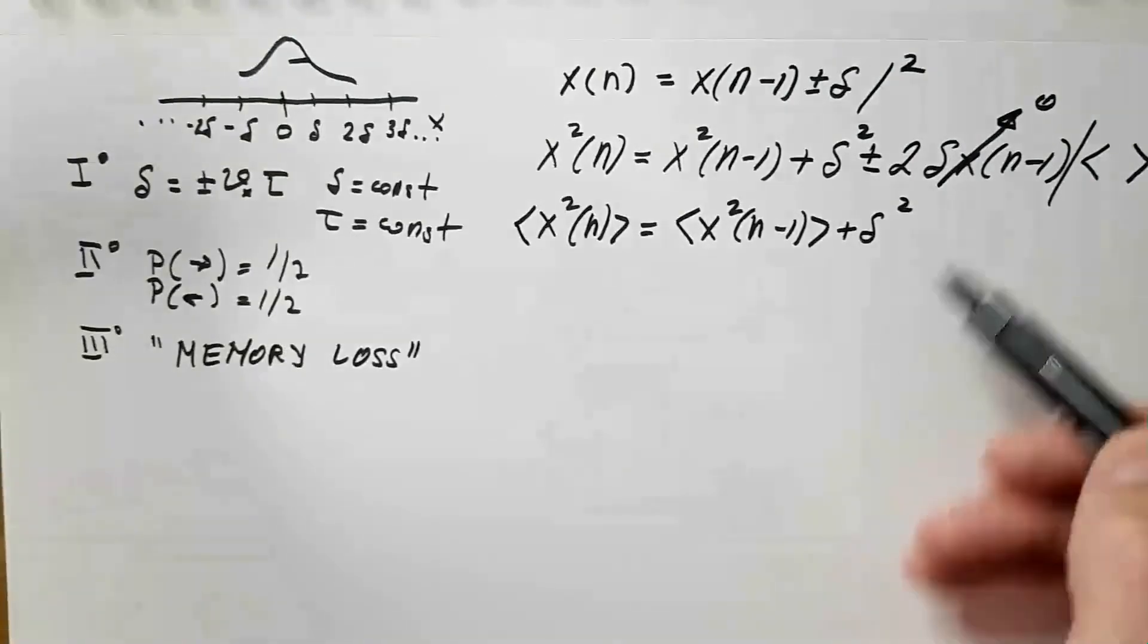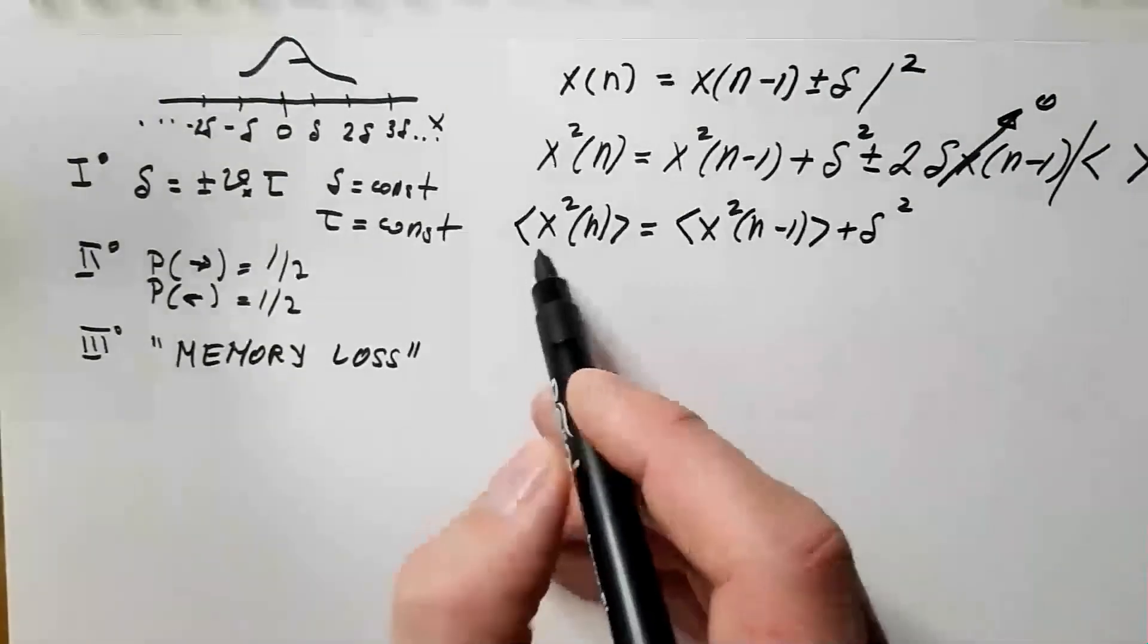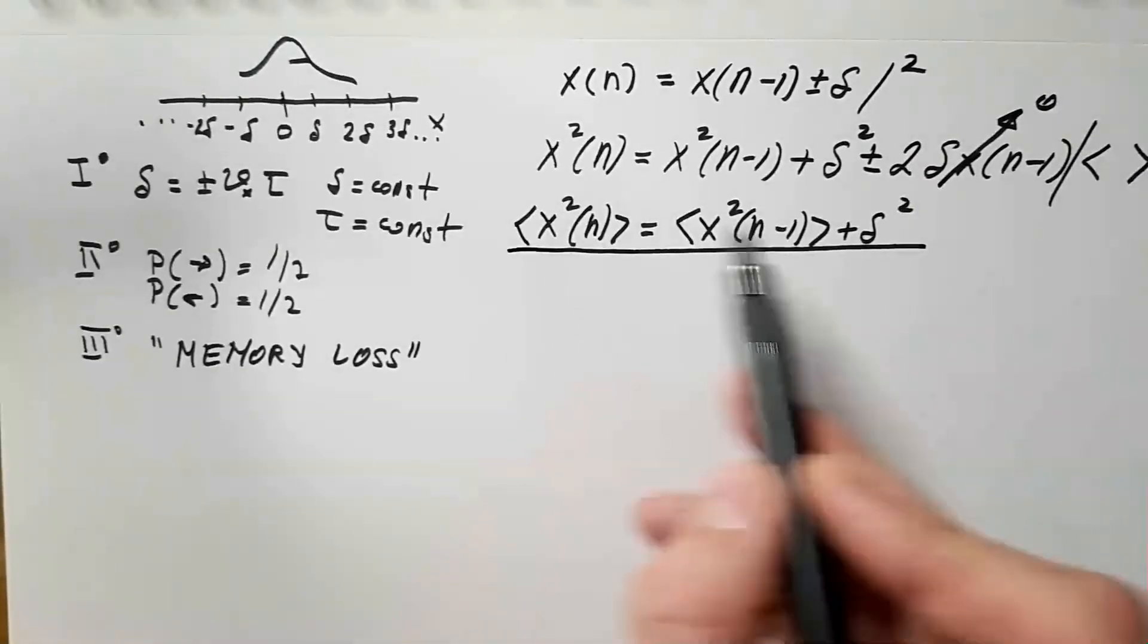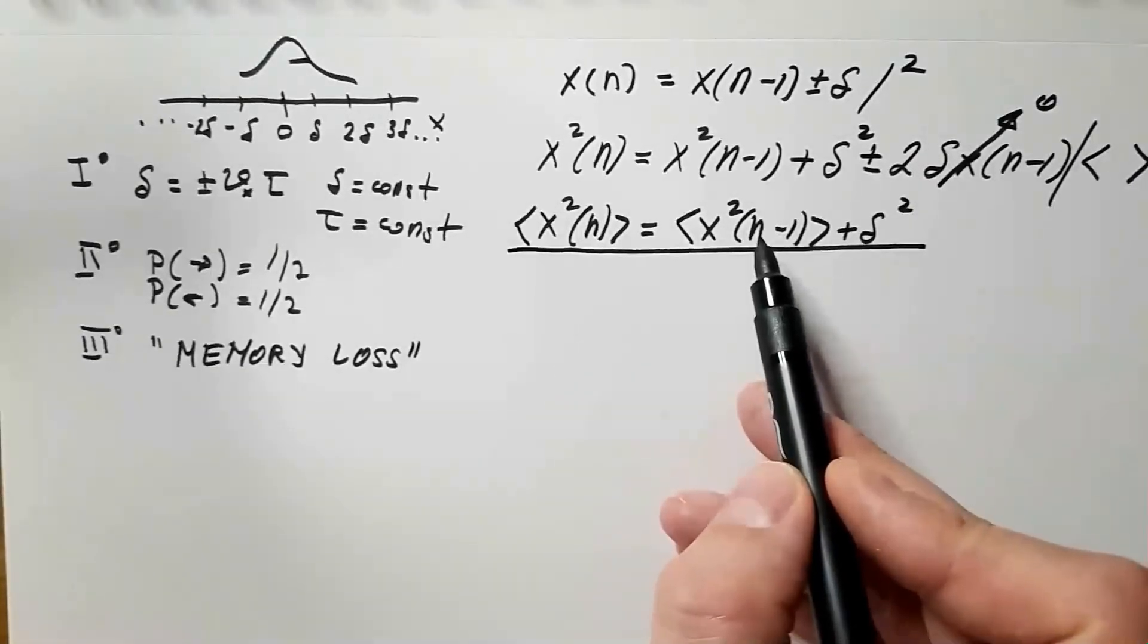Which is represented basically with this plus minus sign, so after many movements, positive steps average out the negative steps or jumps. Okay. Now, this is basically a recursive formula which tells me that the position after n steps depends on the position of n minus one step.